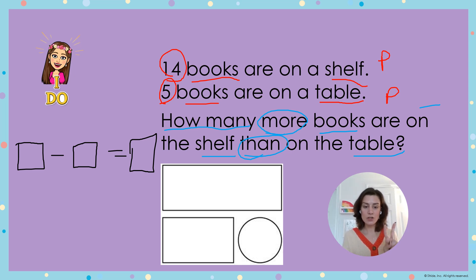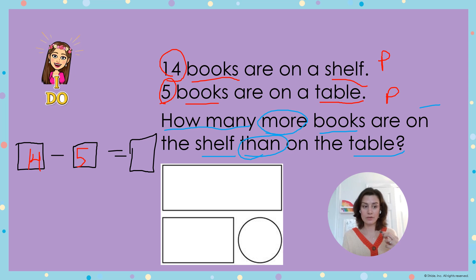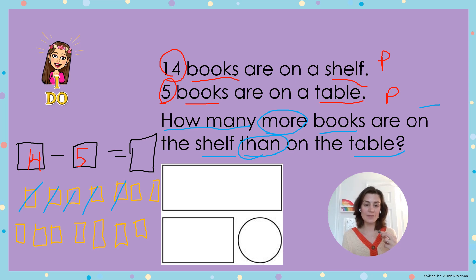I'm trying to find the difference between the two amounts I've been given, so 14 minus 5 equals what. I can draw a picture to help me. I'm going to draw 14 rectangles: 1, 2, 3, 4, 5, 6, 7, 1, 2, 3, 4, 5, 6, 7. I'm taking away 5, so let's go ahead and subtract 5 of them: 1, 2, 3, 4, 5.